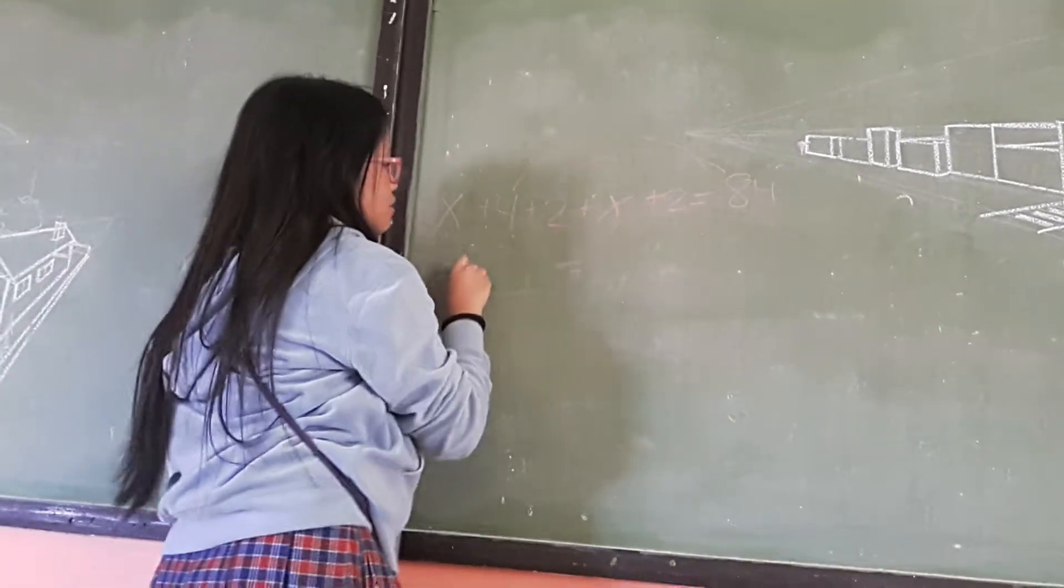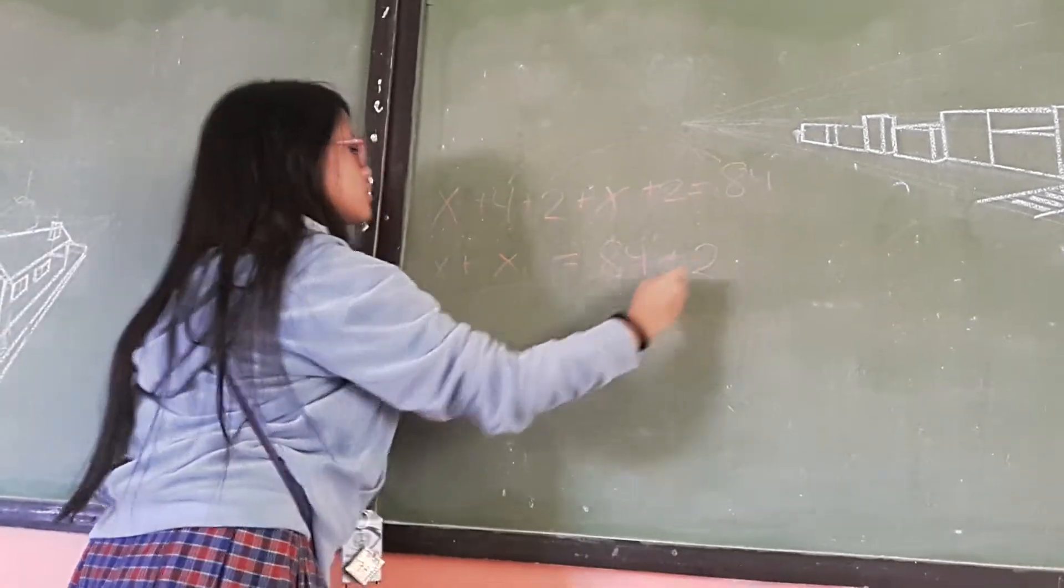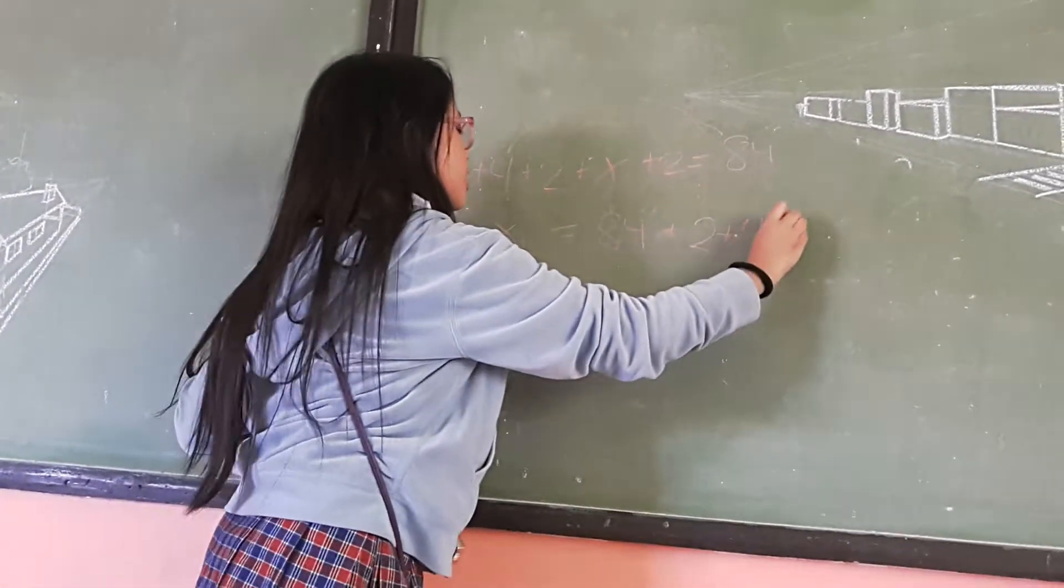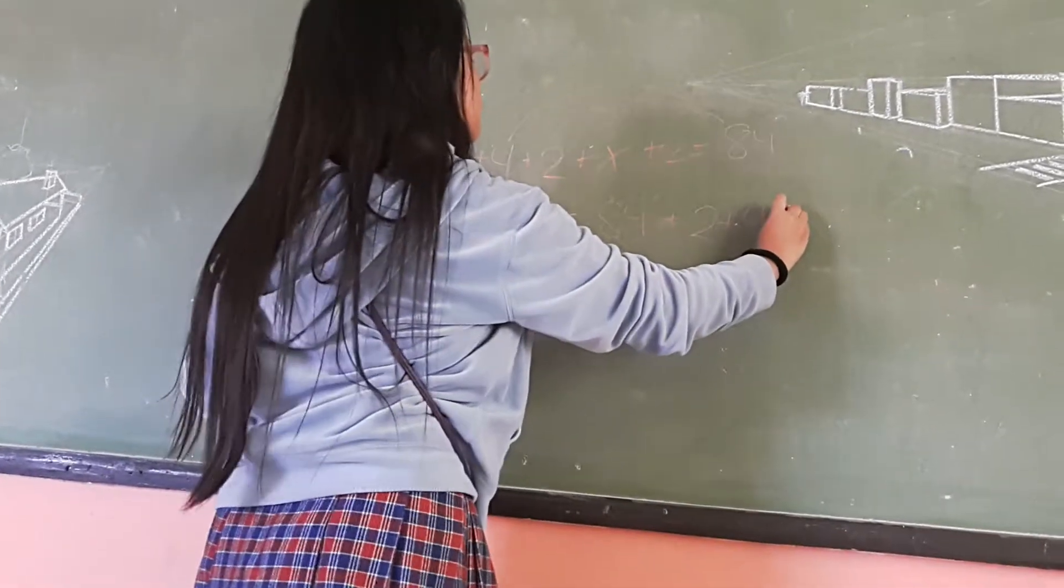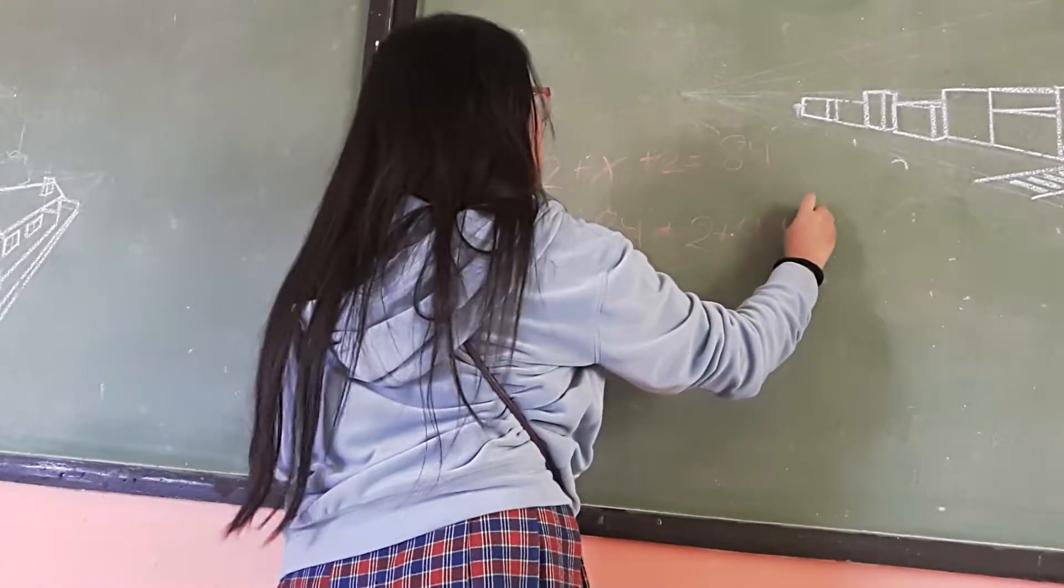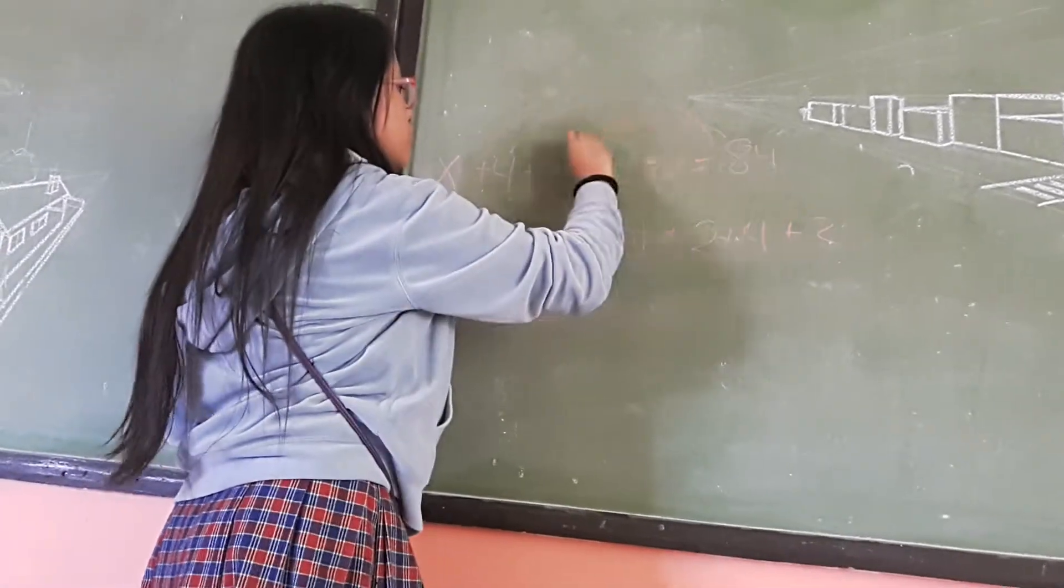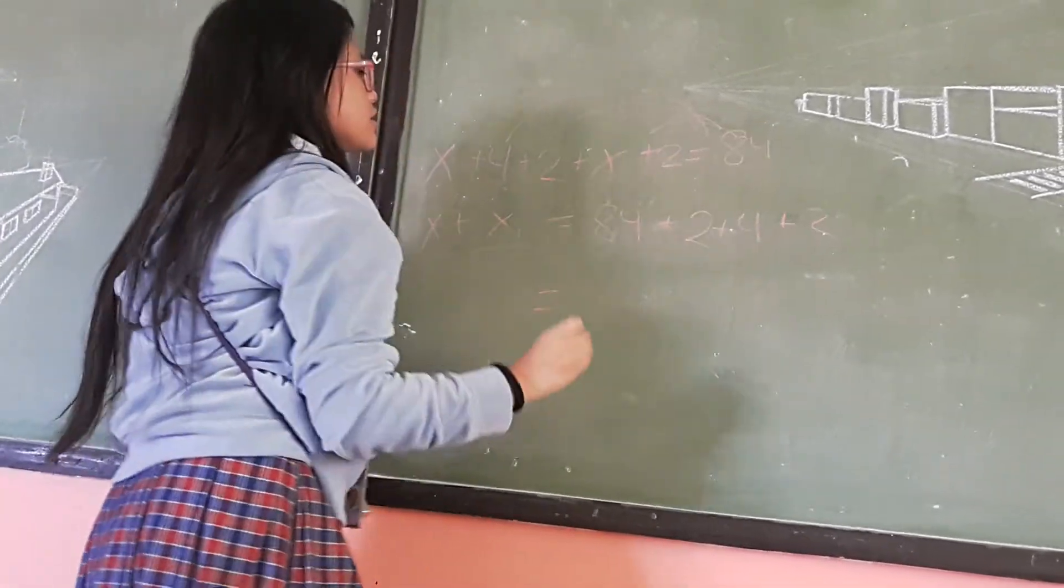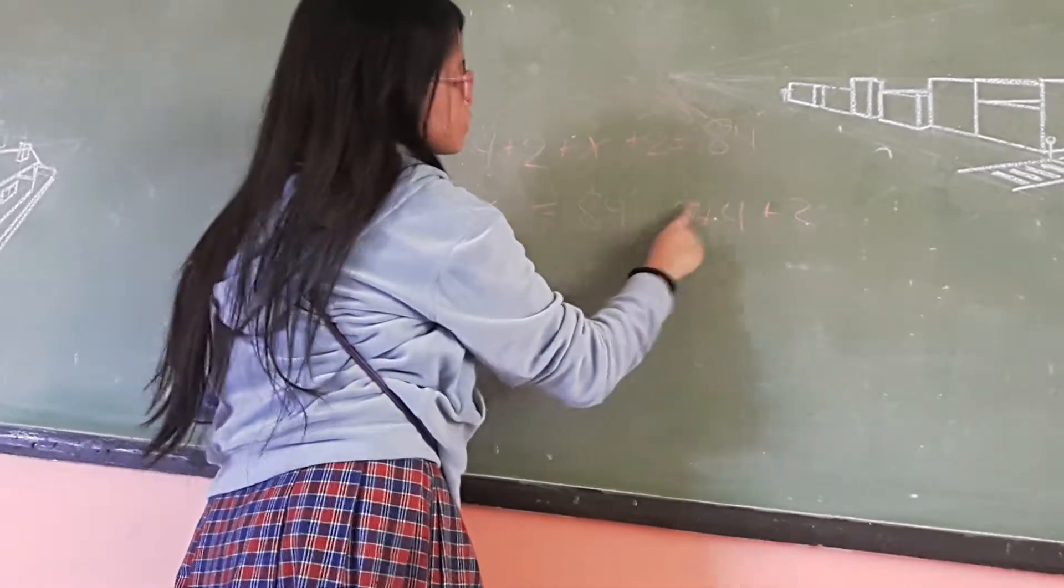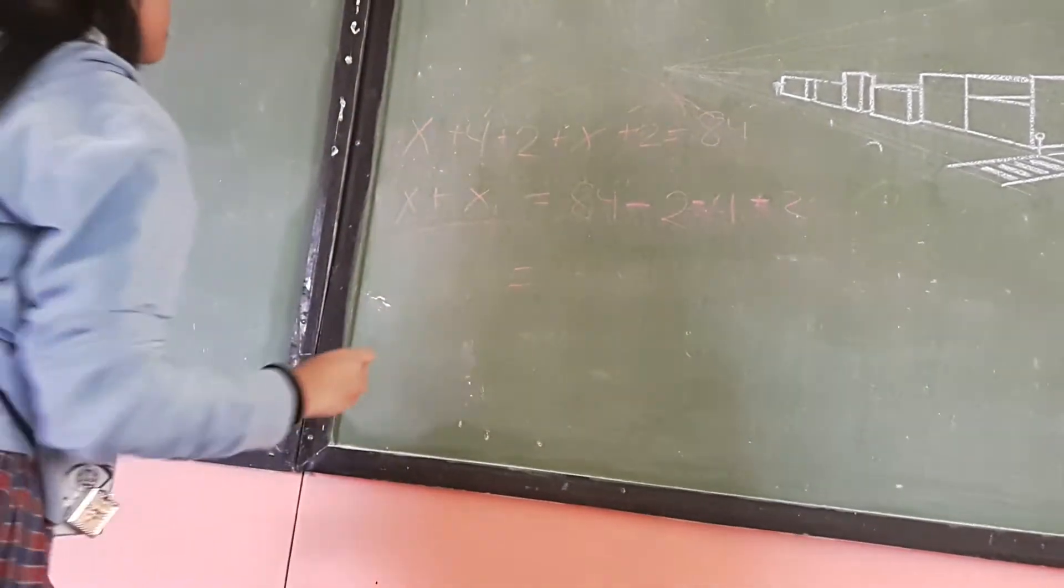When you move a number to the other side, their sign will be changed. So their positive will be negative.